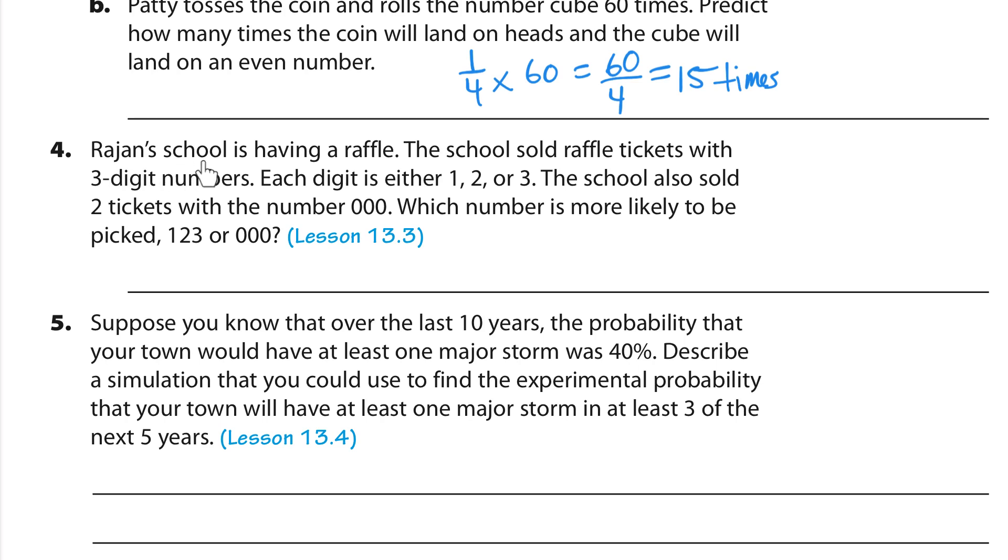Rajan's school is having a raffle. The school sold raffle tickets with 3 digit numbers. Each digit is either 1, 2, or 3. The school also sold 2 tickets with the number 000. Which number is more likely to be picked? 123 or 000? Let me return to this here. It's actually 000. Because, how many tickets have 1, 2, 3 on them? Just 1. How many tickets have 0, 0, 0 on them? 2 do. So, it's more likely. Not much more likely, but technically, it is more likely because there's 2 of those, not just 1.